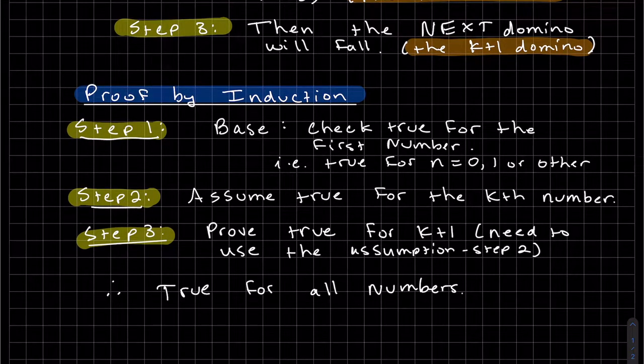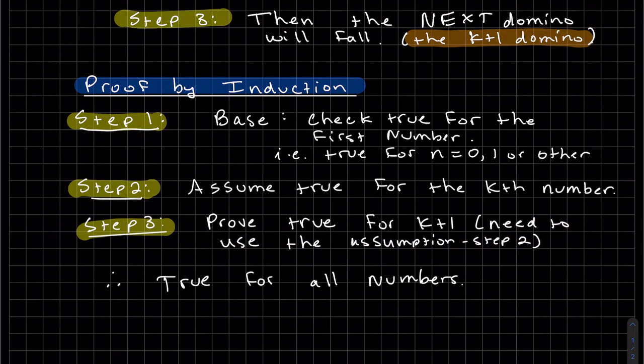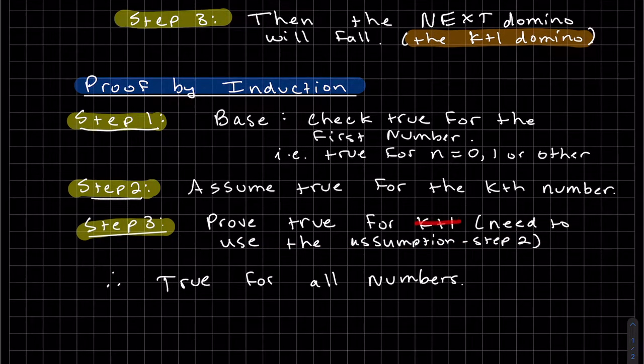And our step 3 is you prove, you're proving your then statement, so we need to prove true for your k plus 1 value. And in order to prove that, you do need to use your if, your assumption from step 2. Once you've proved it's true for k plus 1, then we use our therefore symbol, and we say that's true for all numbers. Therefore, you've proved it's true for all numbers.